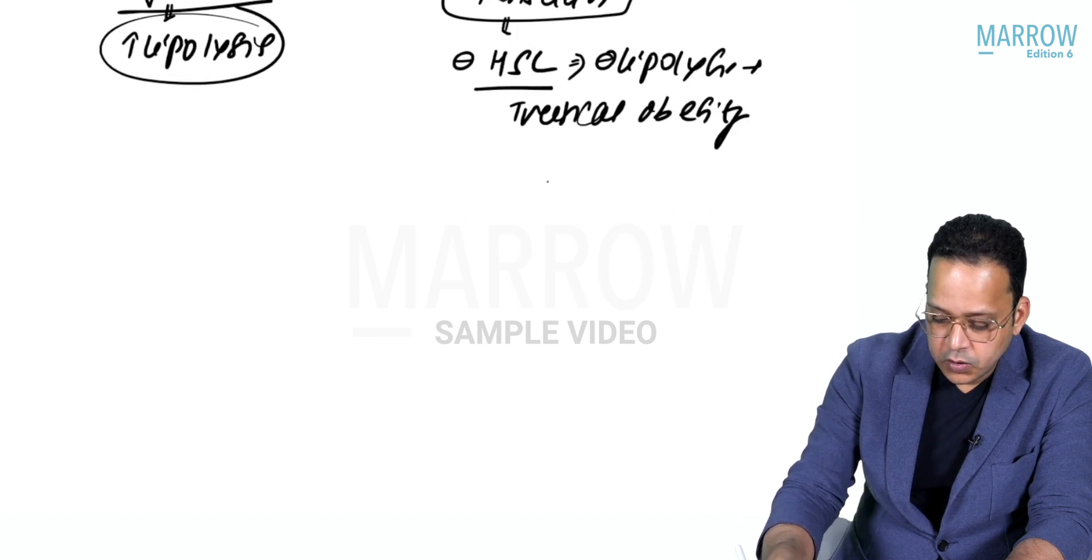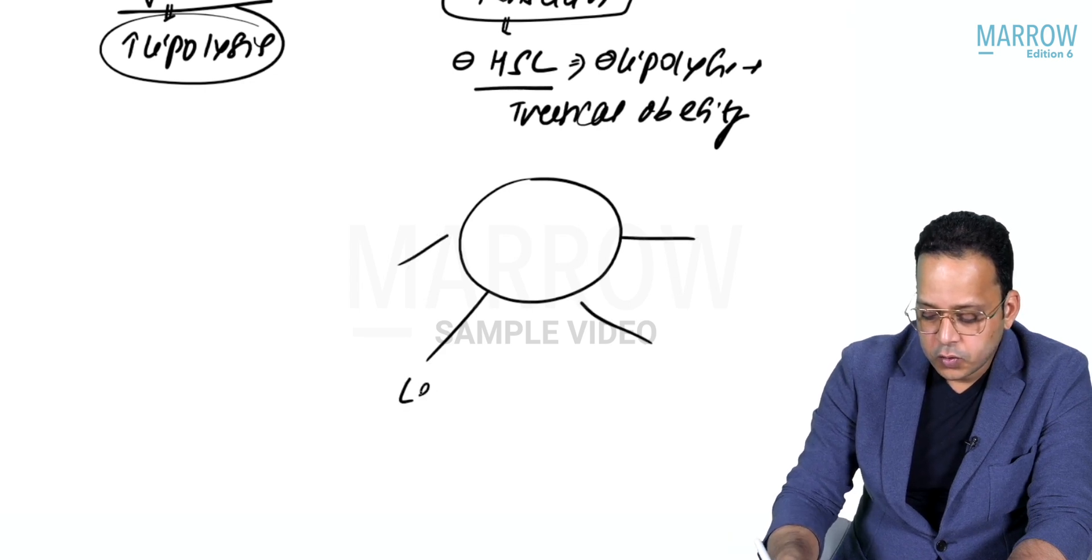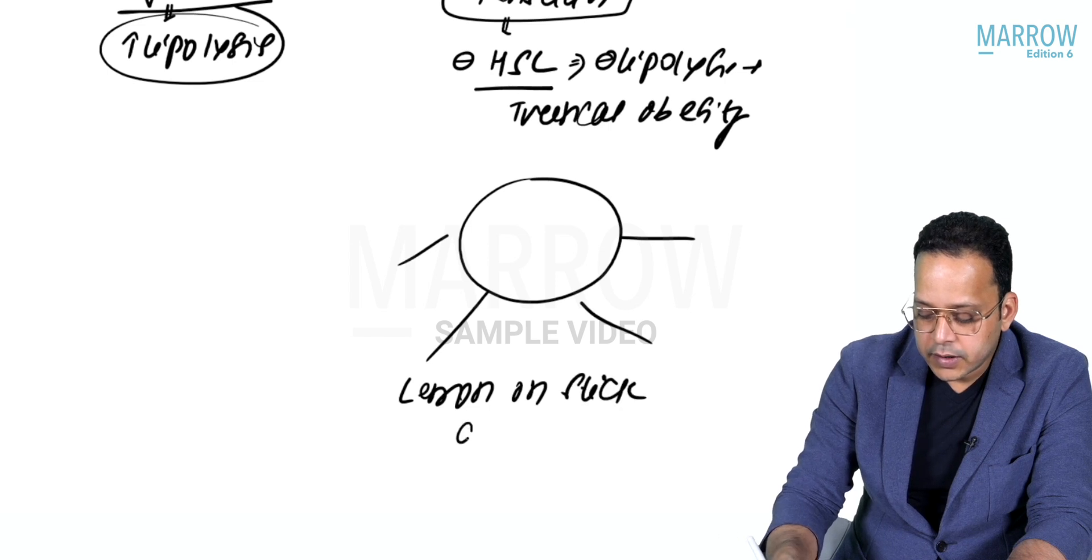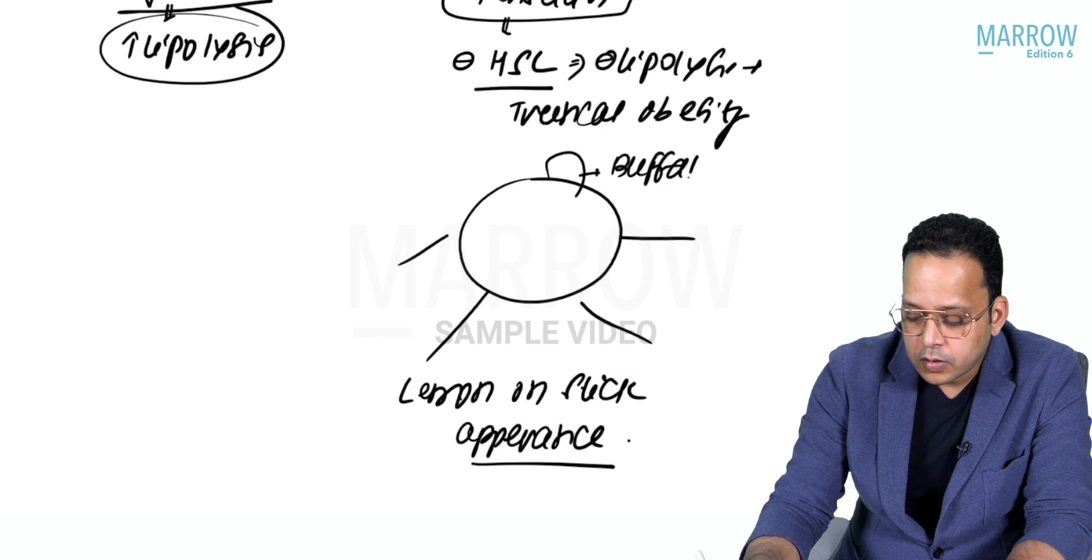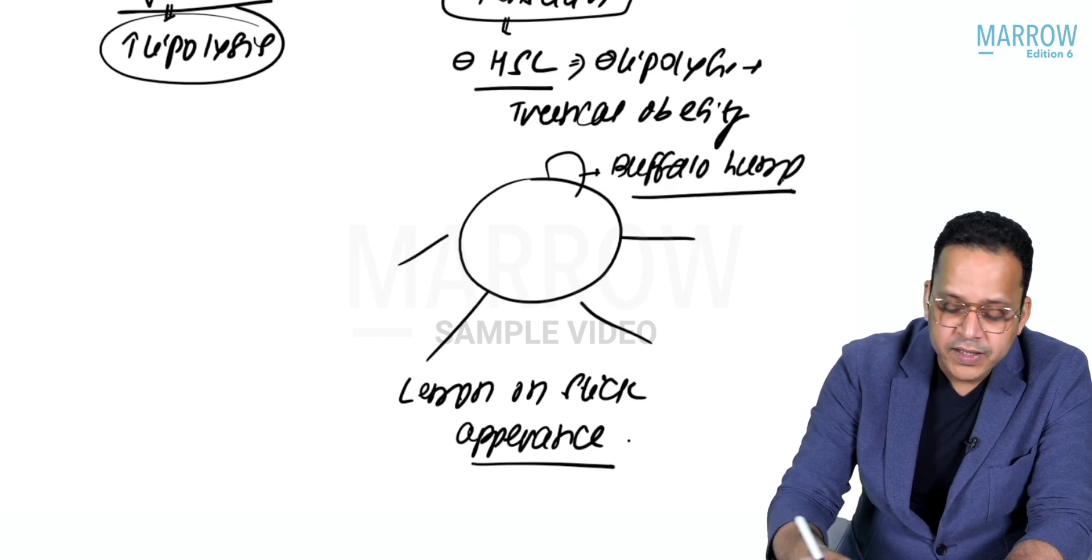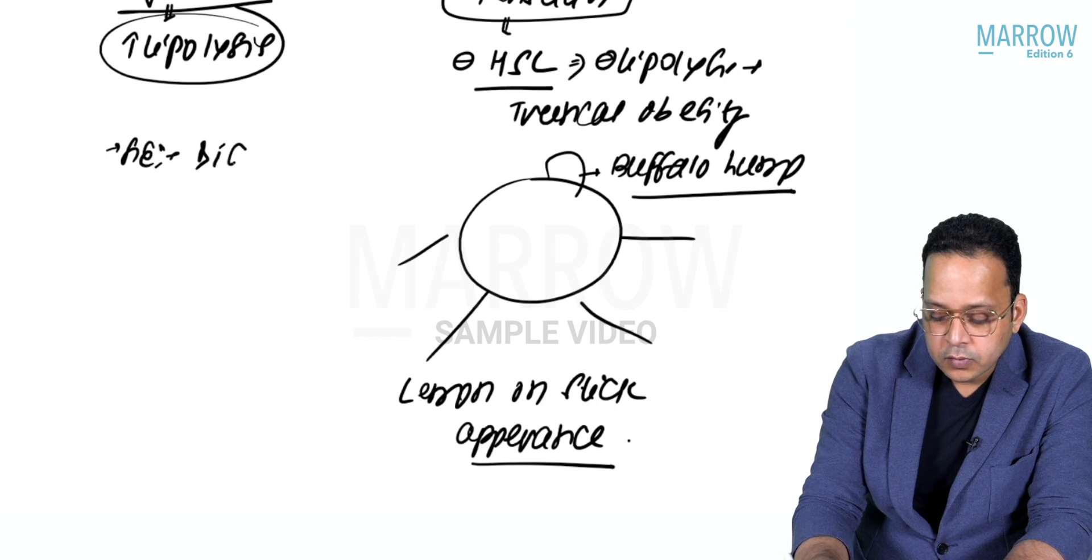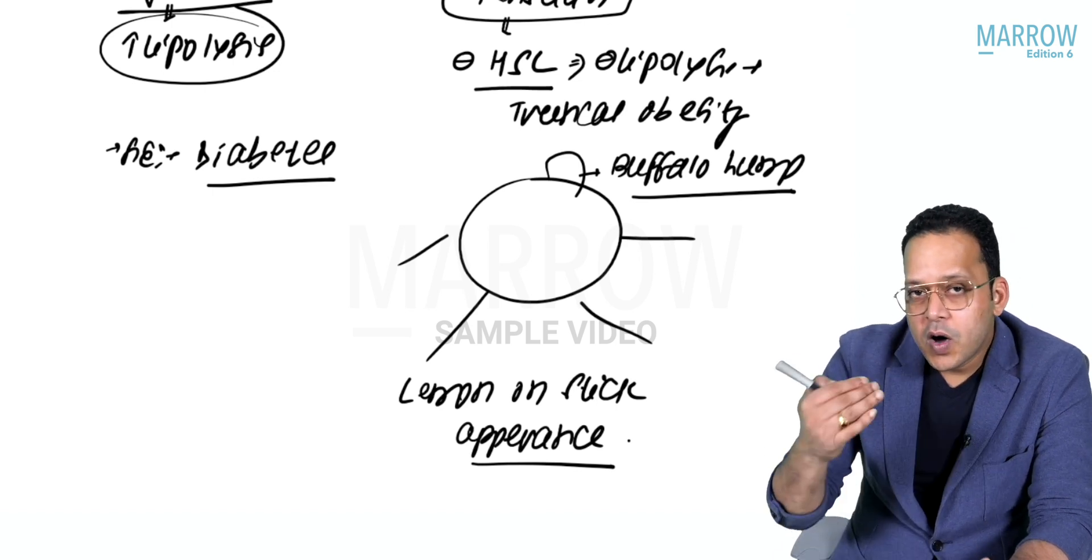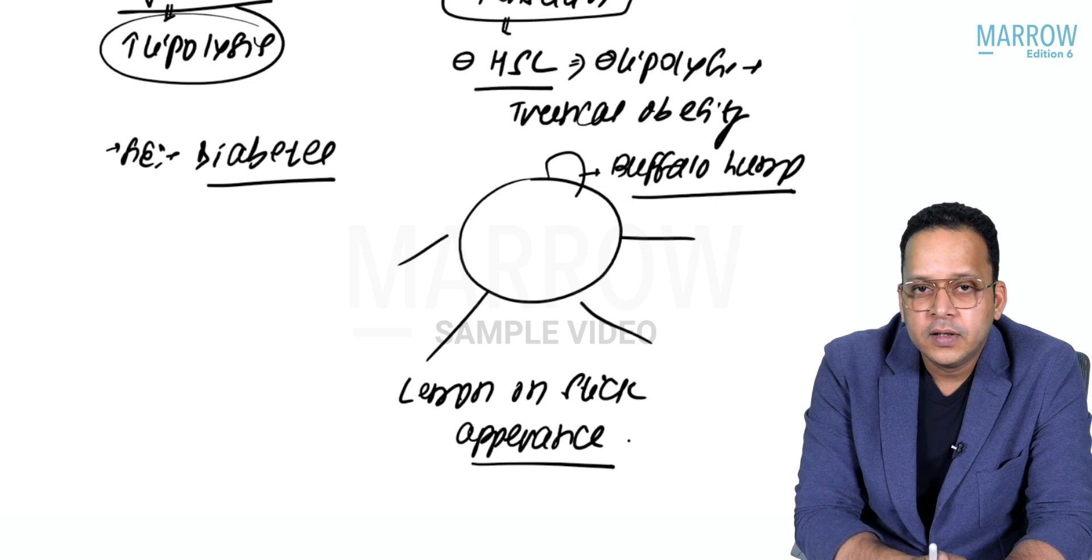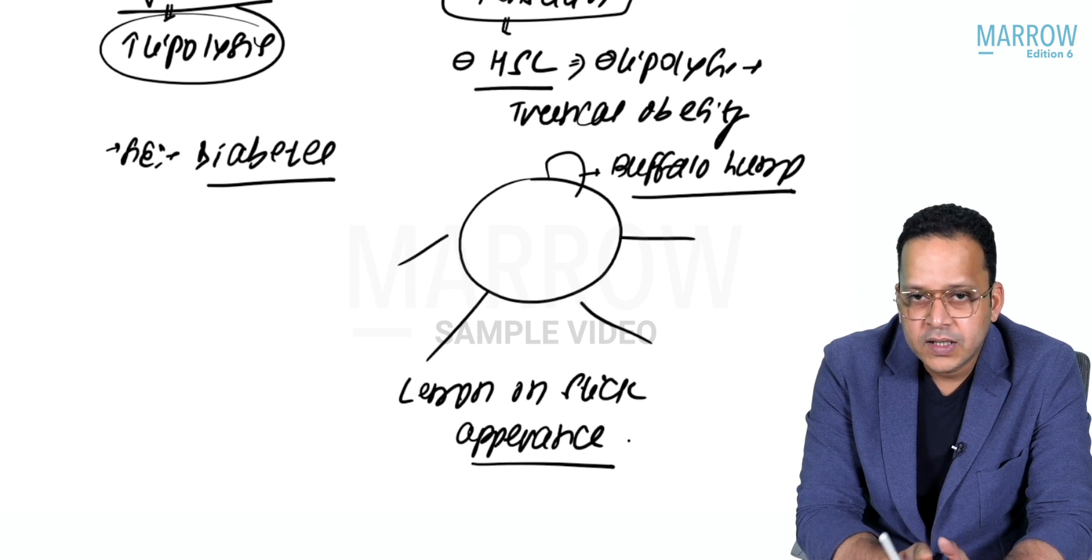You can see here how the patient looks: truncal obesity, limbs are thin. This is also known as lemon on stick appearance, seen in Cushing's disease or syndrome, plus there is a hump called buffalo hump. Long-term use of steroids can cause diabetes mellitus, so if your patient already has diabetes and you're starting steroids, you have to monitor blood glucose and adjust insulin dose.